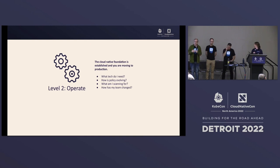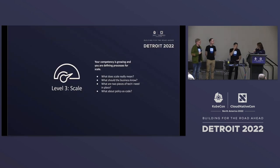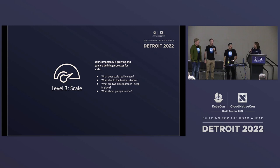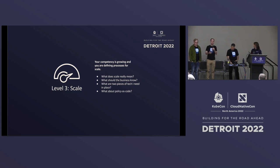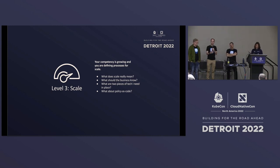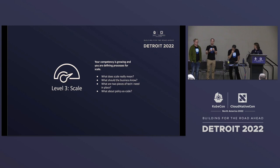Moving on to Level 3, Scale — what does it really mean? Are you scaling one application or many? We look at scale within this model as being both. Within Level 2 we're really focusing on a single application or center of excellence. With Level 3, we're looking at whether we can scale individual applications horizontally or vertically, handle the load, and whether we've developed the level of trust and confidence in our cloud native platforms. We may also be scaling out to multiple applications. This is the level at which we expect to see the most complexity within the environment.